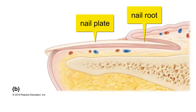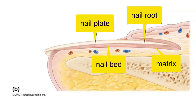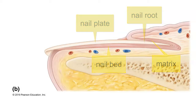The nail lies on a bed of epithelial tissue known as the nail bed. The part of the nail bed under the nail plate that we don't see is called the matrix — the same as the matrix in the hair follicle. It's an area of rapid mitosis where keratinocytes are produced, highly keratinized, and packed tightly together in a plate-like structure so that the nail is formed at the root and then grows outwards towards the free edge.